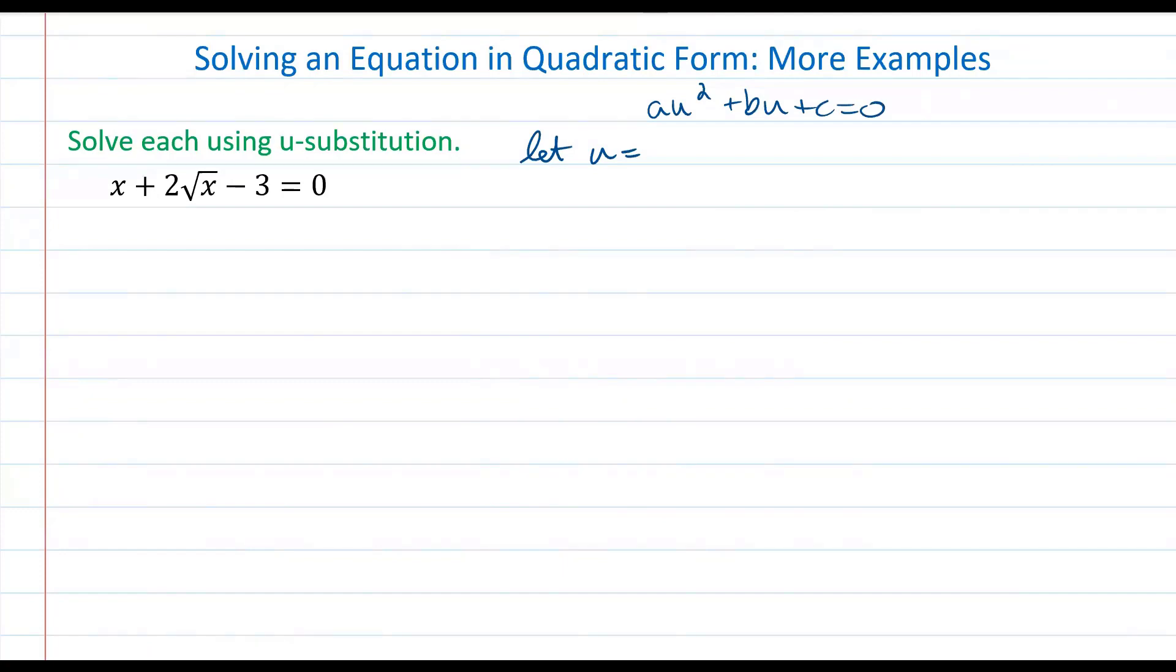So what we know here and a good place for us to start to look at is that we have 2 times the square root of x and we want that to be 2 times u. So let's let u equal the square root of x.